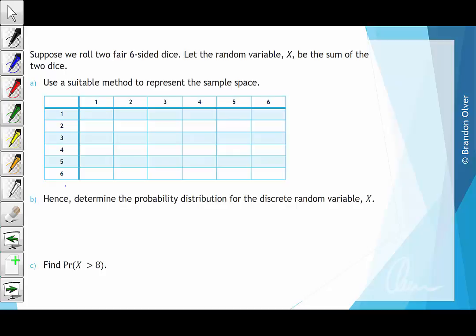Now we sum up the faces pointing up. So we have 1 plus 1 is 2, 1 plus 2 is 3, 1 plus 3 is 4, 1 plus 4 is 5, 1 plus 5 is 6, 1 plus 6 is 7. We continue that through the table and end up with a table looking like this.